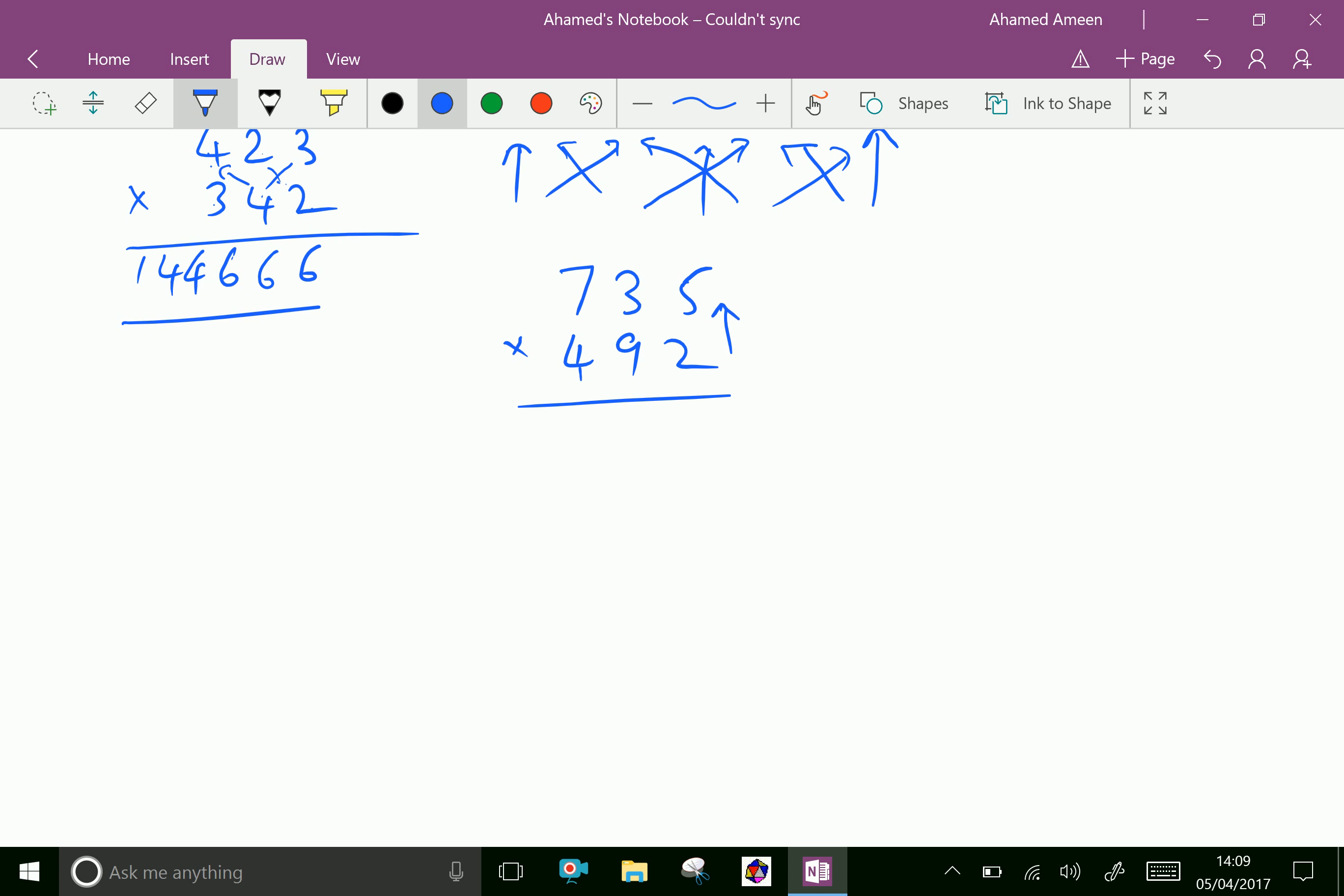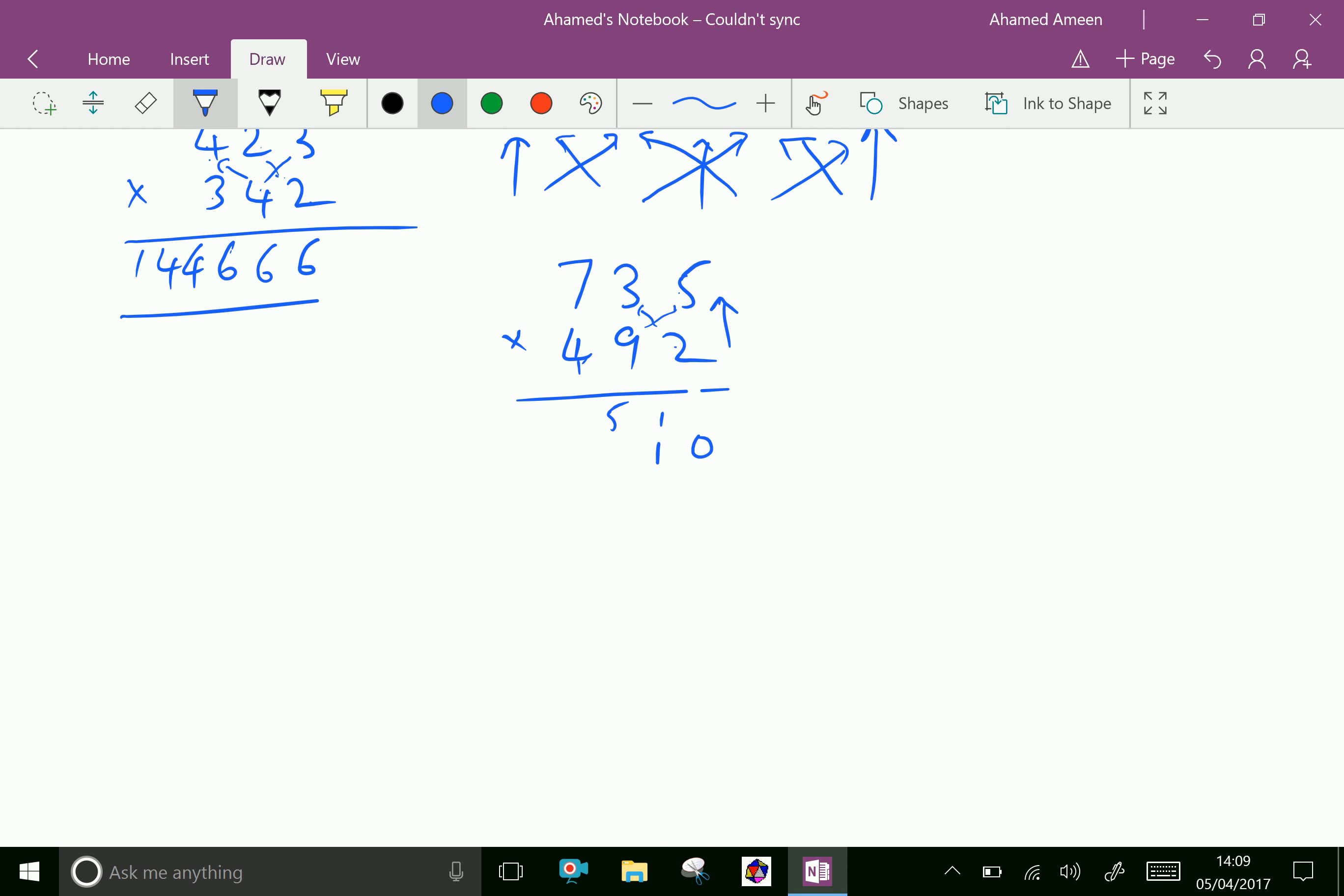2 times 5 is 10, put 0 and 1 carries. 2 times 3 is 6, and 9 times 5 is 45. 45 plus 6 is 51, put 1 and 5 carries. 2 times 7 is 14, 4 times 5 is 20. 20 plus 14 is 34, plus 3 times 9 is 27. 27 plus 34 is 61.